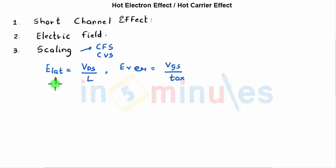Let's see what's happening for E lateral. E lateral, because VDS is not scaled down, is going to be VDS upon L dash, which is L by S because of the scaling. L dash is equal to L by S, and that shows that E lateral will increase.